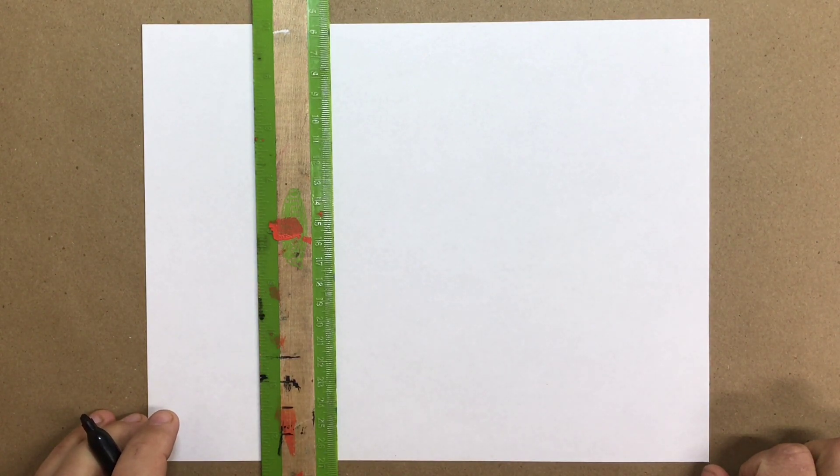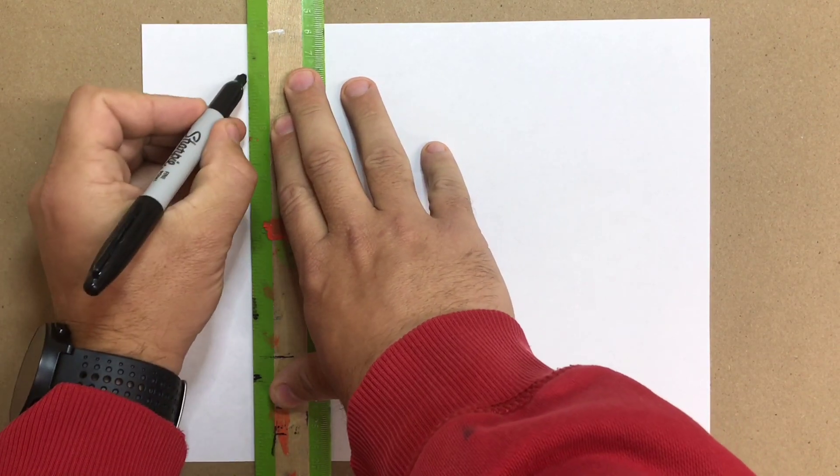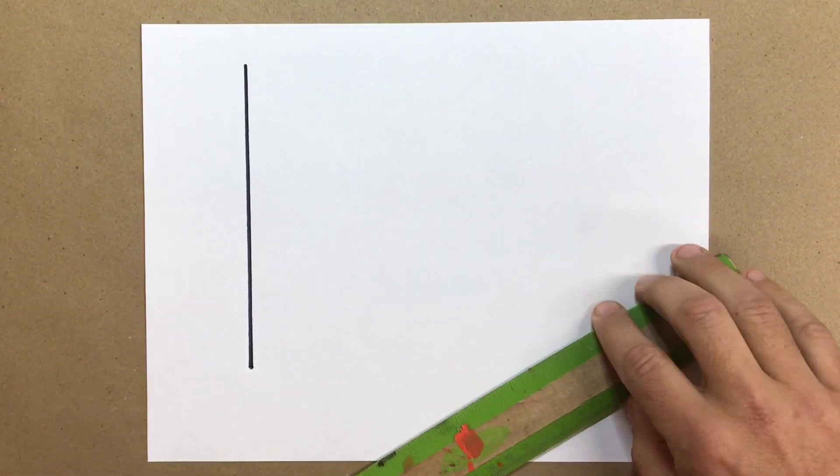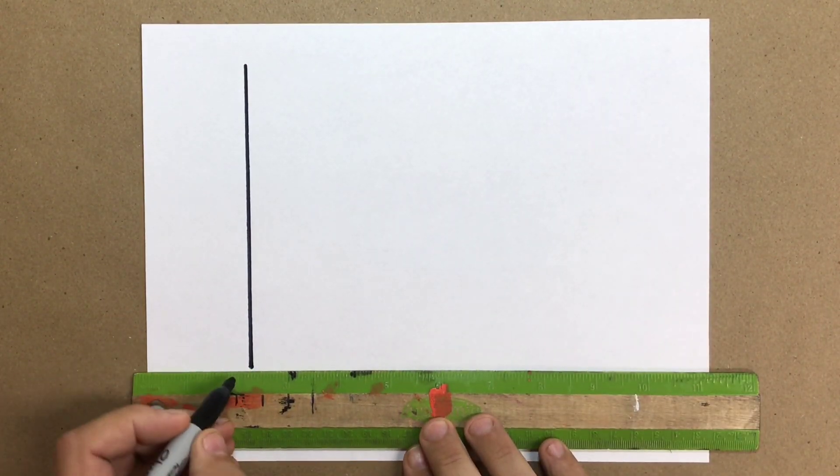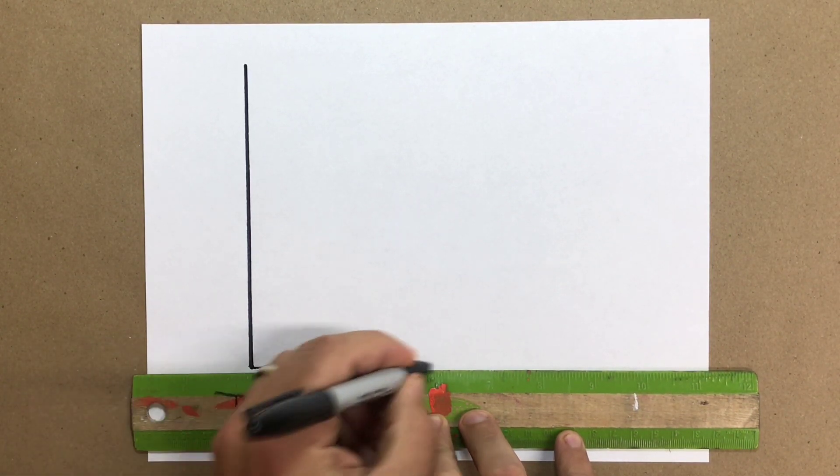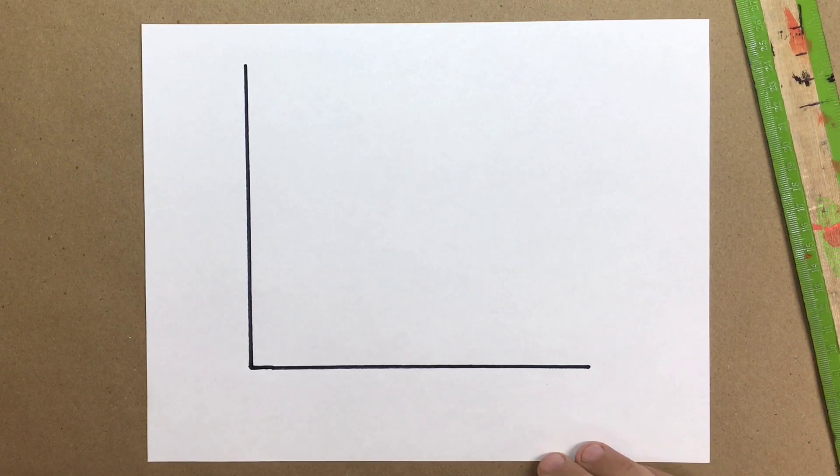If you're not used to using a ruler, make sure you hold it steady with your hand so it doesn't slide. So I'm going to make a vertical line coming down. Turn the ruler and match it up with the bottom where I stopped on that line and make a horizontal line going this way. So you can see I've created an L shape.